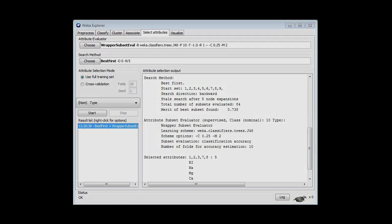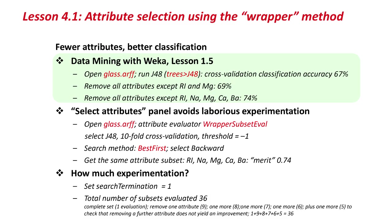Going back to the slide, that's really the same kind of thing as we got before — the same subset, and the merit is the same as the accuracy. It's a little bit of a coincidence that we got the same results, because Weka doesn't do exactly the same thing, and the setting of the random number generator and so on. Anyway, we did get the same results here in this situation.